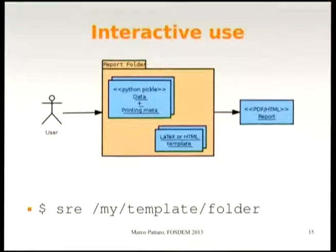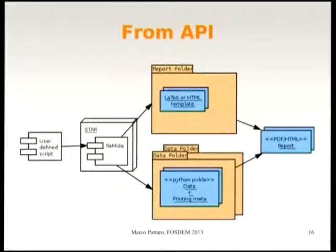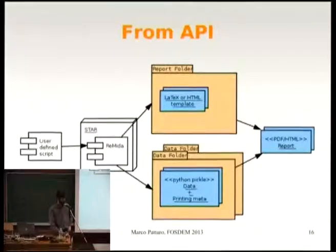This is the basic usage. You call a Python script — the Star reporting engine — pointing to a folder containing both the template in LaTeX or HTML and data in the form of Python pickles. You save your Star objects as Python pickles in a folder and can easily produce a report. Or if you want to produce multiple reports with different datasets but always the same template, you can — just by accessing the API of the Star reporting engine.